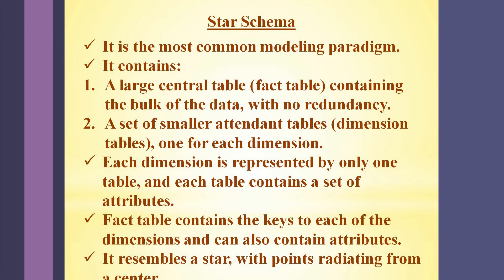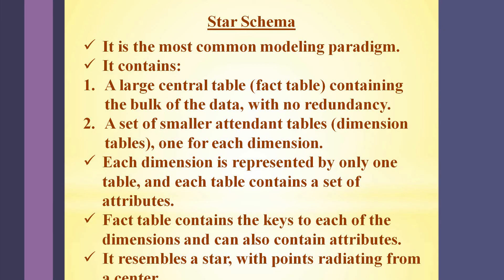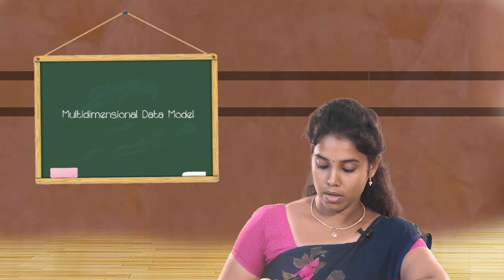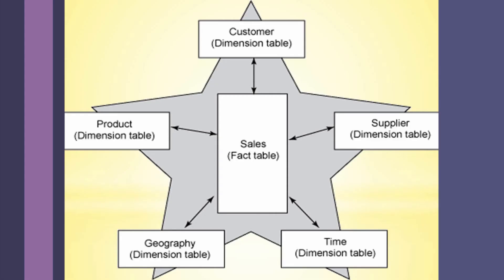First, let us discuss star schema, which is the most commonly used schema. It contains a large central table called the fact table, which contains the bulk of the data with no data redundancy. It also contains a set of smaller attendant tables called dimension tables, one for each dimension. Data redundancy is data getting repeated unnecessarily in one or more records, fields, or tables. Each dimension is represented by only one dimension table. Star schema resembles the shape of a star with points radiating from the center, and the example on screen shows a single central fact table shared by many dimension tables.